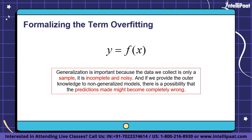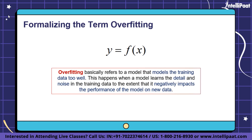If we provide outer knowledge to non-generalized models, predictions made might be completely wrong. A successful machine learning model should generalize well from training data to any data from the problem domain, enabling future predictions on data the model has never seen. However, two major problems arise: underfitting and overfitting. Overfitting refers to a model that models the training data too well — it learns the details and noise in the training data to the extent that it negatively impacts performance on new data.